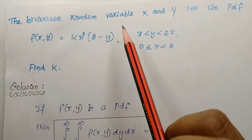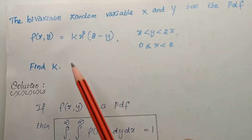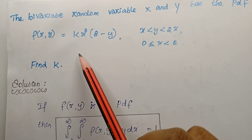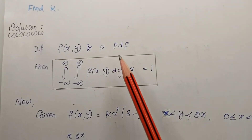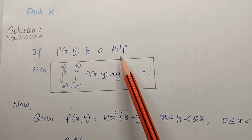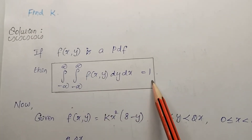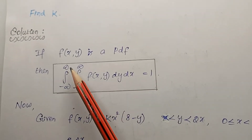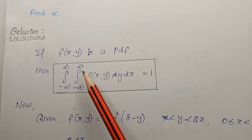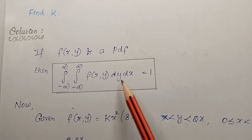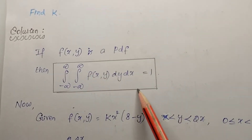Bivariate random variables x and y will have a pdf function and limits. We will find the k value. If we look at the double integral two-dimensional defined value, this is the probability value 1. That is, the integral from minus infinity to infinity of f(x, y) dy dx equals 1. This is the fundamental condition we know.